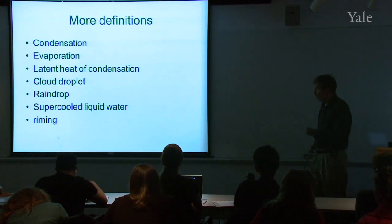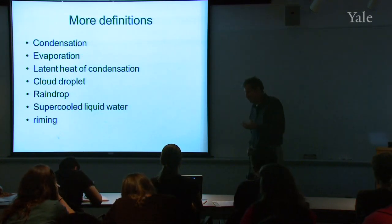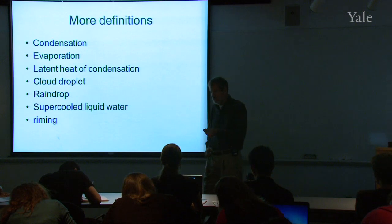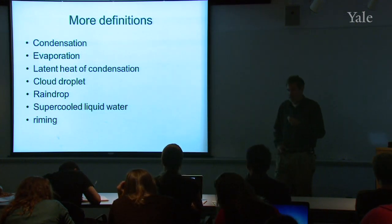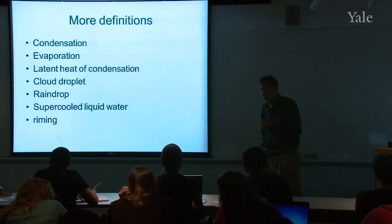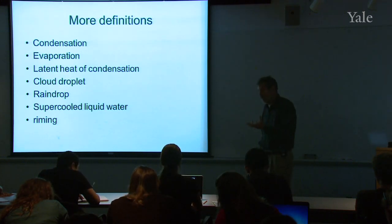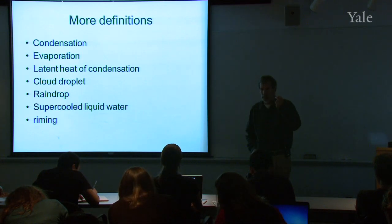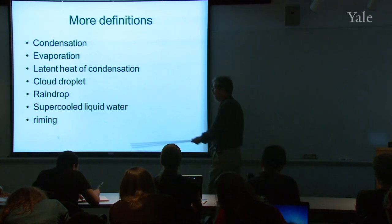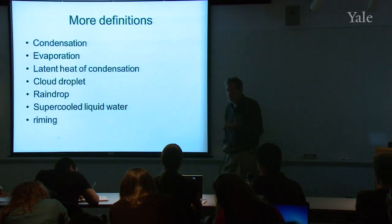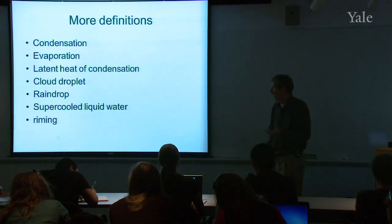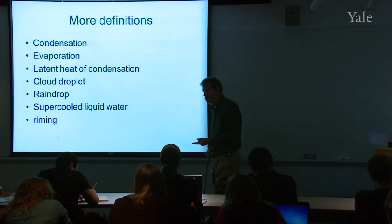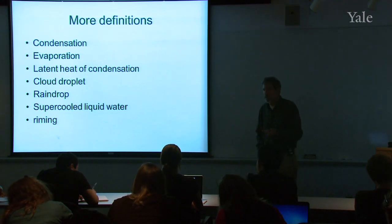Some other definitions we're going to need. Condensation is when you change water vapor to liquid. Or sometimes we use that word also when we're condensing it to ice. But usually it's used when we condense it to liquid. The evaporation is the reverse of that. It's when you take water in the liquid form and evaporate it, put it back in the vapor state. When you do either of those things, there is heat either taken in or released. And that heat is called the latent heat of condensation.